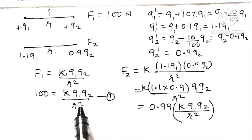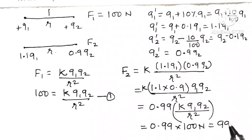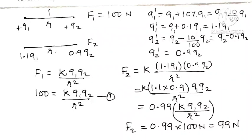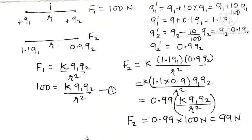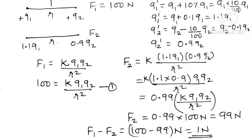The value of K Q1 Q2 divided by R squared is 100 Newton from equation 1. So F2 equals 0.99 times 100 Newton, which is 99 Newton. Therefore F1 minus F2 equals 100 minus 99 equals 1 Newton — the force of repulsion decreases by 1 Newton.